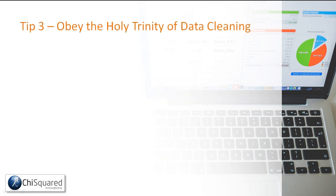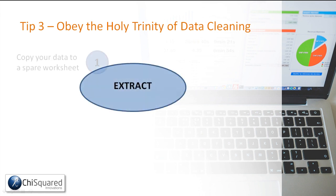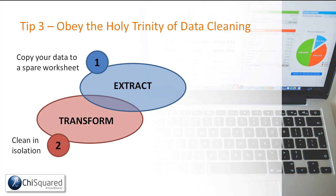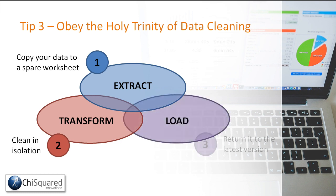Tip number three: obey the holy trinity of data cleaning. The first step is extract — you copy some data to a spare worksheet. Once you've got it there, you can transform it into the clean data that you need, so you clean your data in isolation. And finally, you can load it back into the latest version. Extract, transform, load — this is the holy trinity of data cleaning.